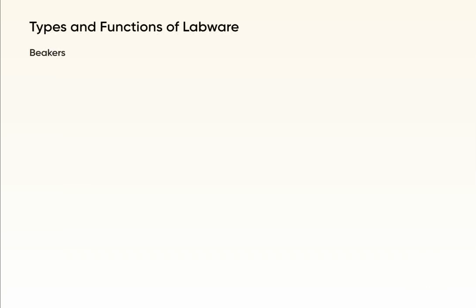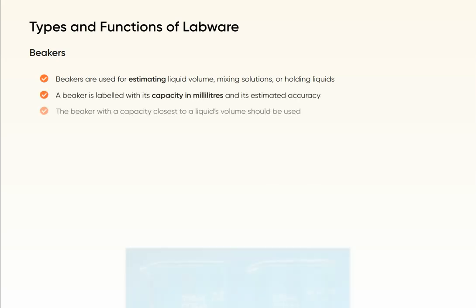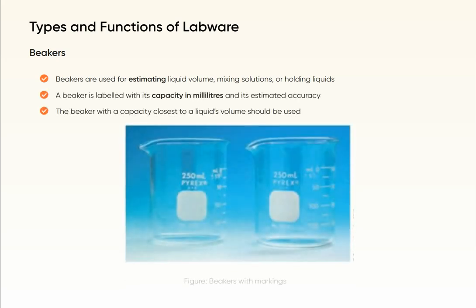Beakers are used for estimating liquid volume, mixing solutions, or holding liquids. A beaker is labelled with its capacity in milliliters and its estimated accuracy. The beaker with a capacity closest to a liquid's volume should be used.